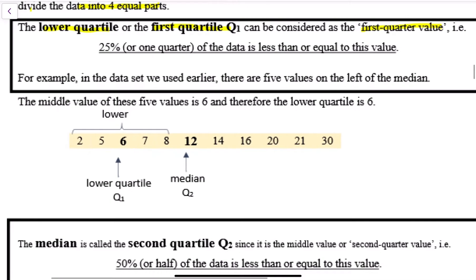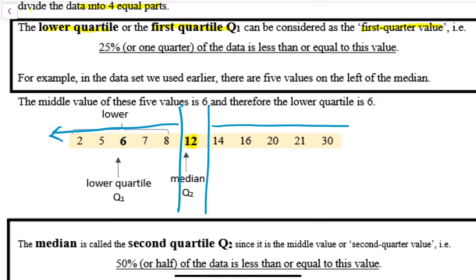For the data we had earlier, there are five values on the left of the median. When the median splits the data, there are five numbers on the left and five numbers on the right. For the five numbers on the left, the middle number of those five values is six. So I split the half into half again — the middle number is six, therefore my lower quartile Q1 is six.